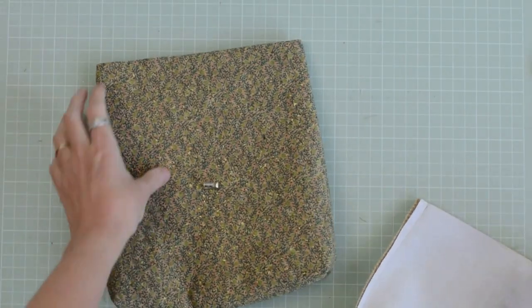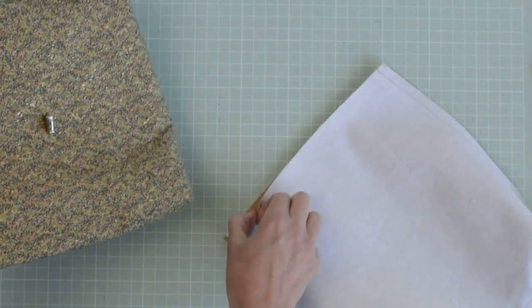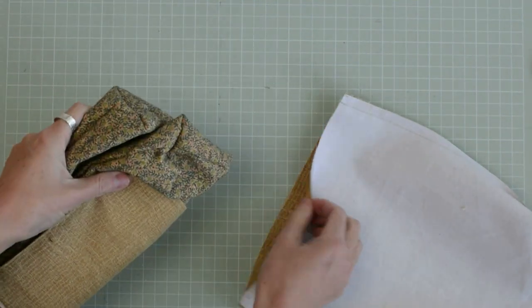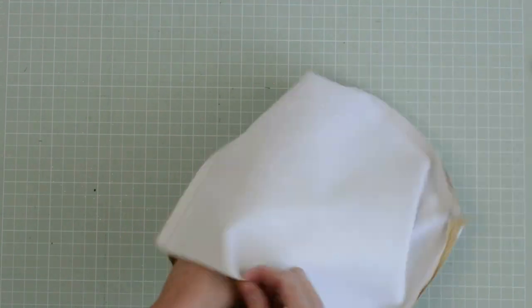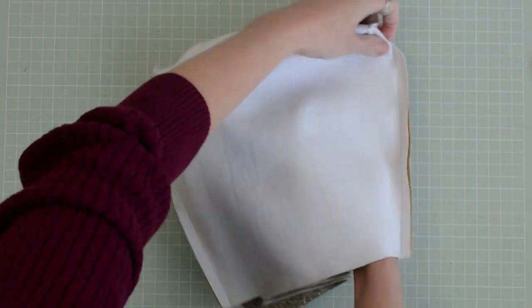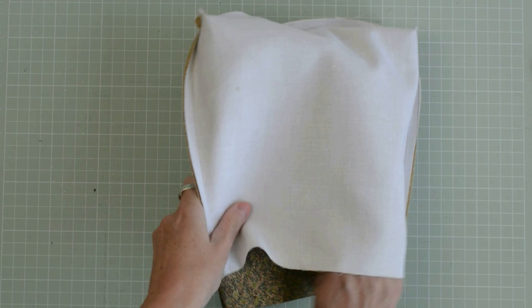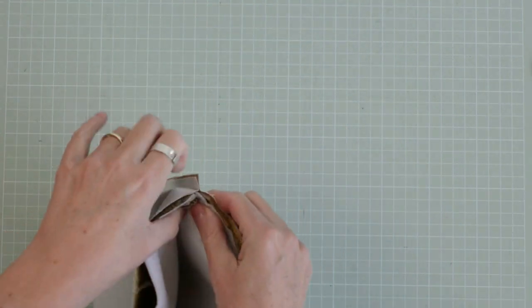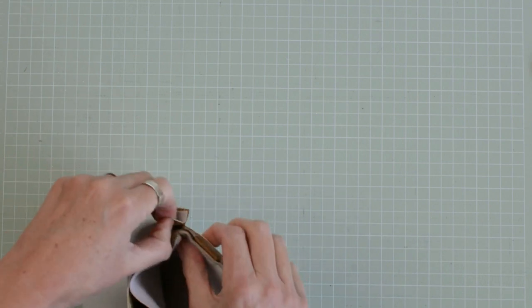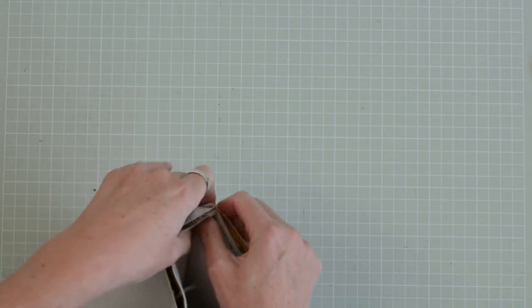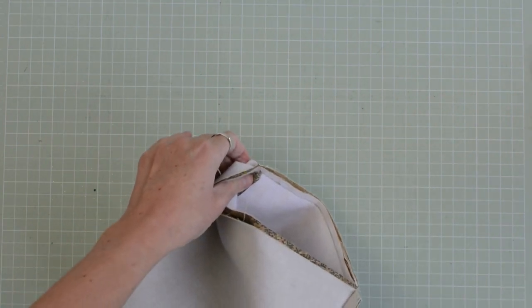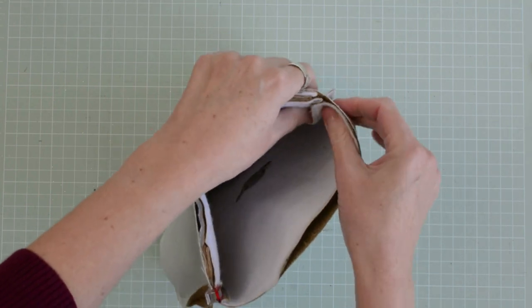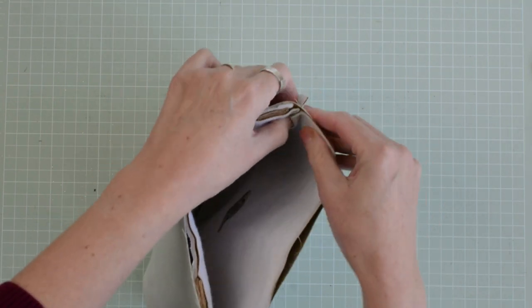So make your lining as you did for the outer bag. Side seams, bottom seam, then box the corners. Now we're going to insert the outer bag into the lining. The right sides of the two fabrics face each other. Align your side seams and press your seam allowances out just to help reduce bulk when you're sewing the bag together. Again, I'm using clover clips to hold everything in place. Make sure you do push your outer bag really far down into your lining.